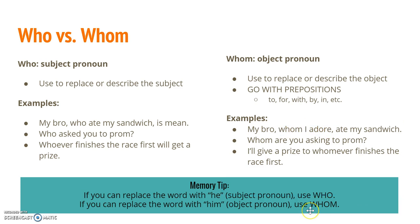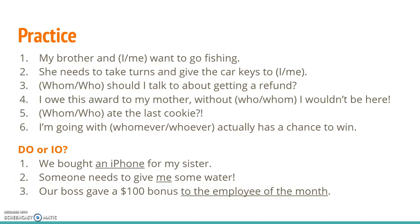I hope that makes some sense. A lot of people use a memory tip like this: if you can replace the word with he, that's your clue to use who — so instead of 'he ate my sandwich,' say 'who ate my sandwich.' Likewise, if you can replace the word with him, an object pronoun, use whom — so instead of 'I'll give a prize to him,' say 'I'll give a prize to whom.' That is a great trick to help you out with questions like this.